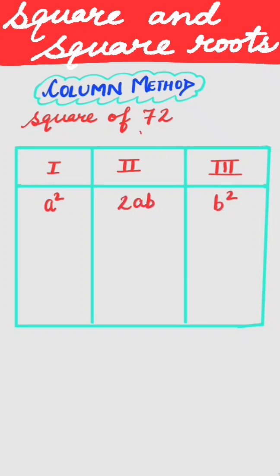Here we use it. Now a is 7 and b is 2. So in place of a² we write 7², then 2 into 7 into 2, and b² is 2². This equals...